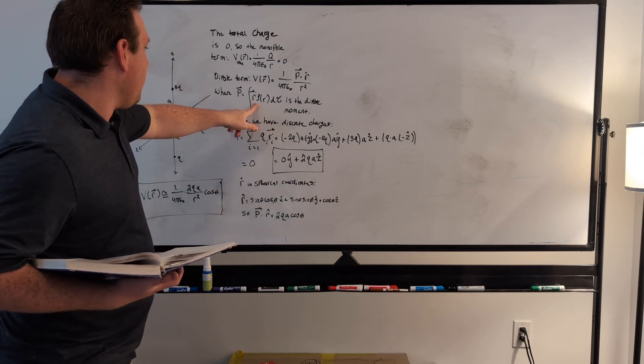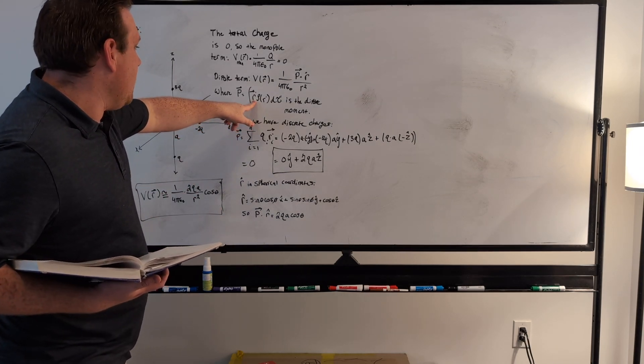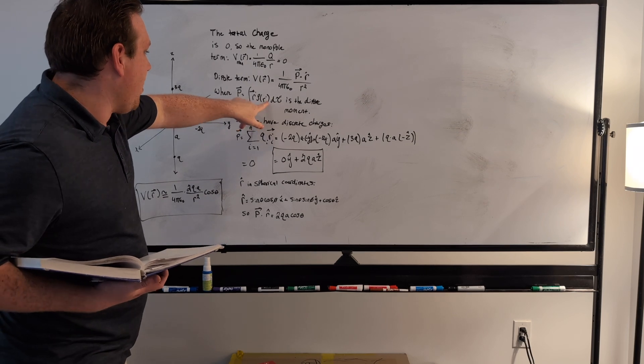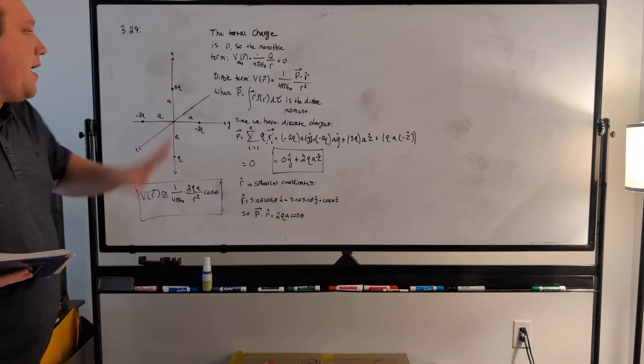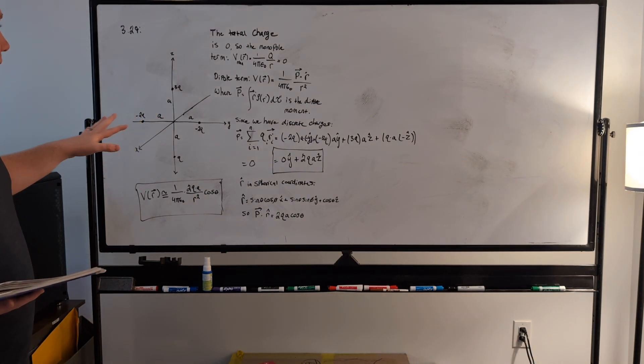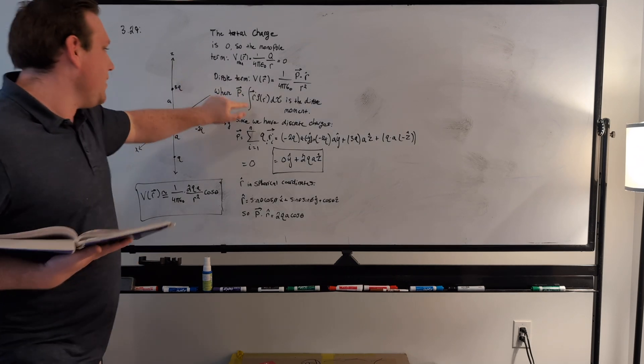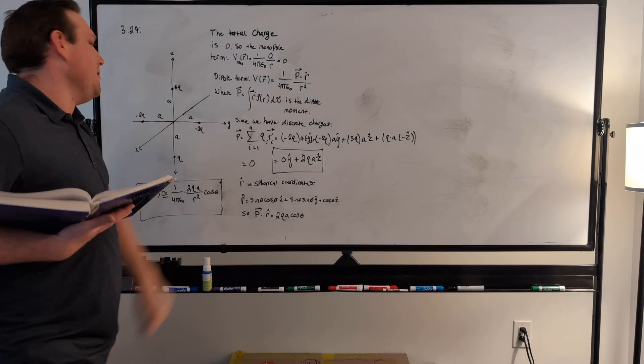So just the integral over r-prime times rho of r-prime times d tau prime, so that's just the integral part minus the Legendre polynomial, I guess, but this is how he defines the dipole moment.